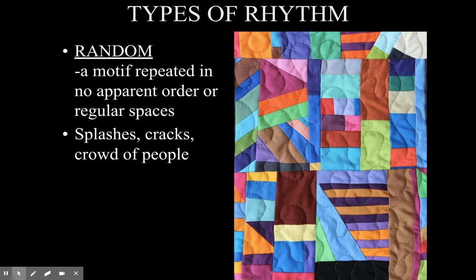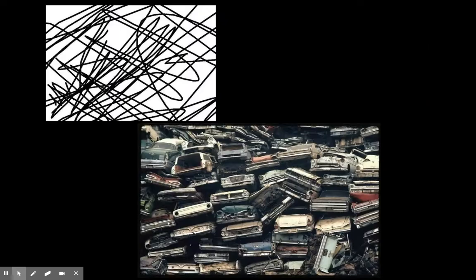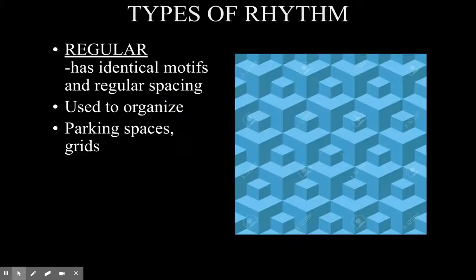Here are more examples of random rhythm — the motif changes, it's different, and the spacing is different. Next, we have regular rhythm, which is the opposite of random. Regular rhythm has identical motifs and regular spacing — often used to organize things. Think about parking spaces or grids: completely regular and completely planned out. It can seem a bit boring, because it's the same motif repeated with the same spacing.